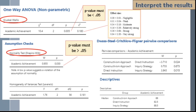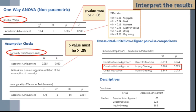It is represented by the table under DSCF pairwise comparisons. This is how we interpret the results. First, compare the constructivism approach and direct instruction, then examine the p-value to see if it is significant with less than 0.05. Next, compare constructivism approach versus inquiry strategy — again, look at the p-value. The same applies to direct instruction versus inquiry strategy.